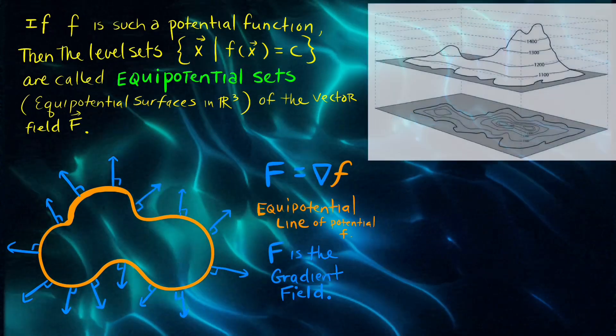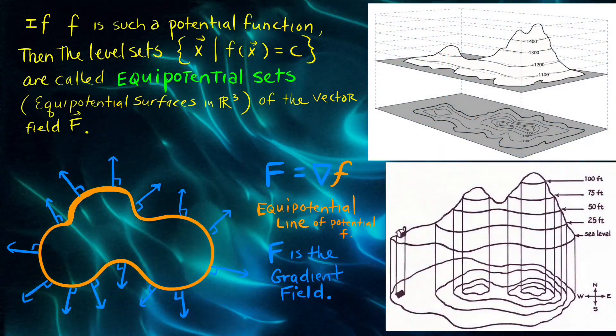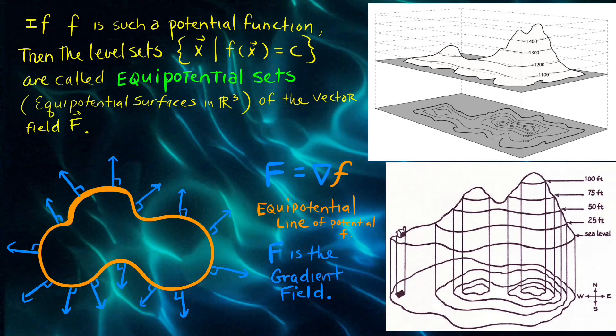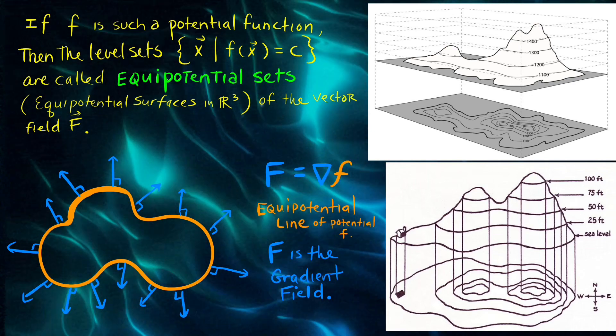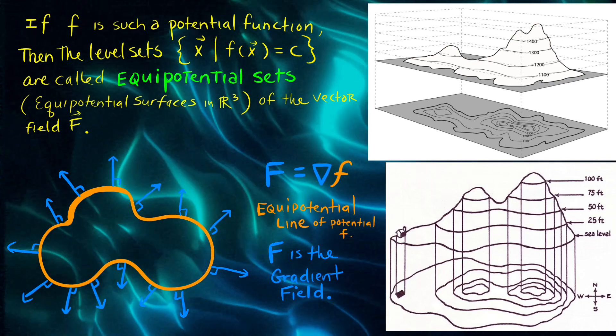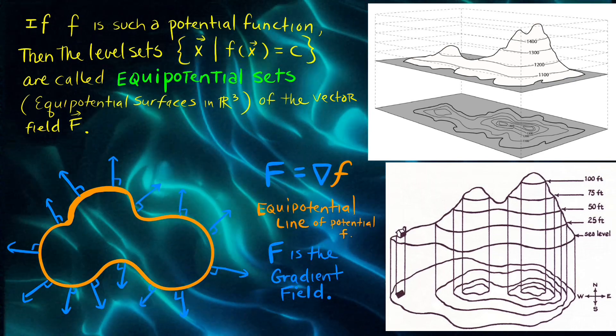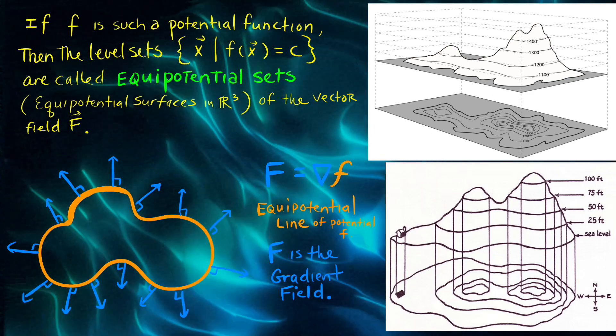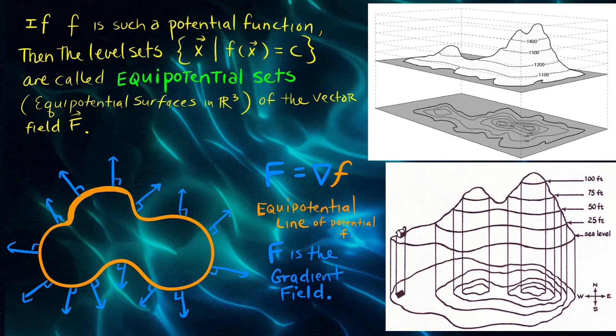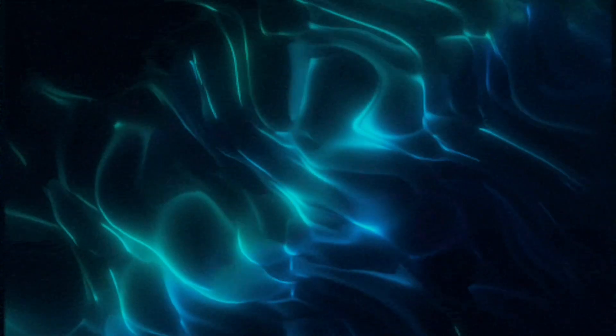If f is such a potential function, then the level sets are considered or called equipotential sets, or in R^3 equipotential surfaces of the vector field. In other words, the level curves can be thought of as different elevations of a contour map of a mountain, and each elevation corresponds to a level curve seen on our contour map.